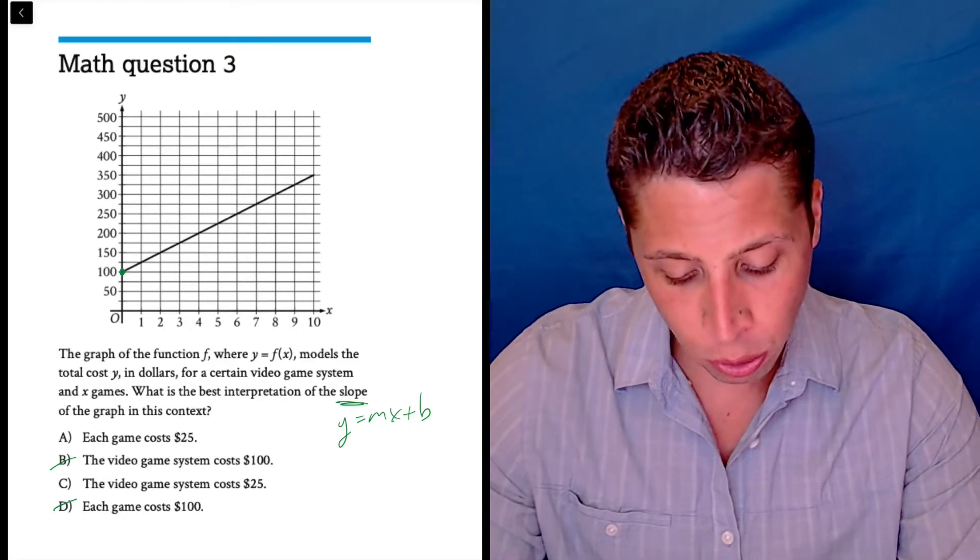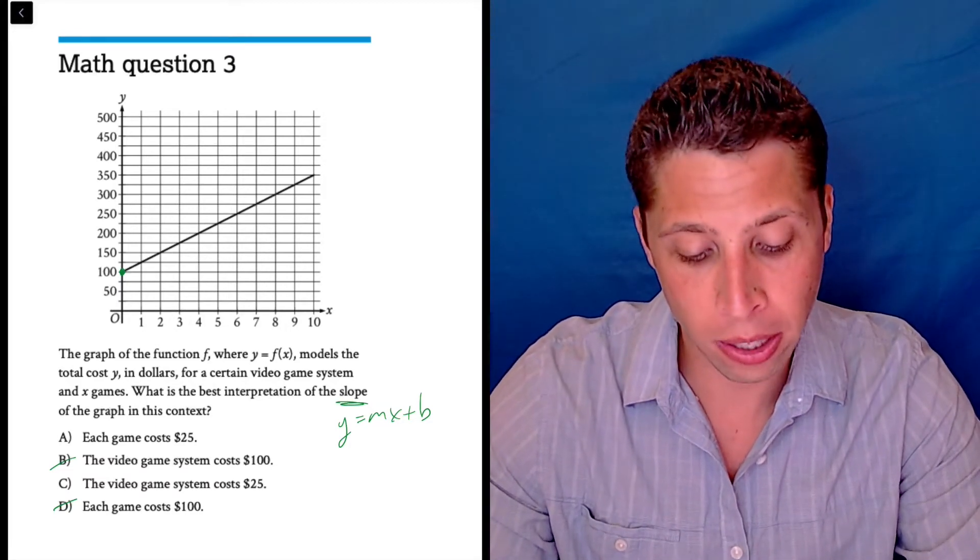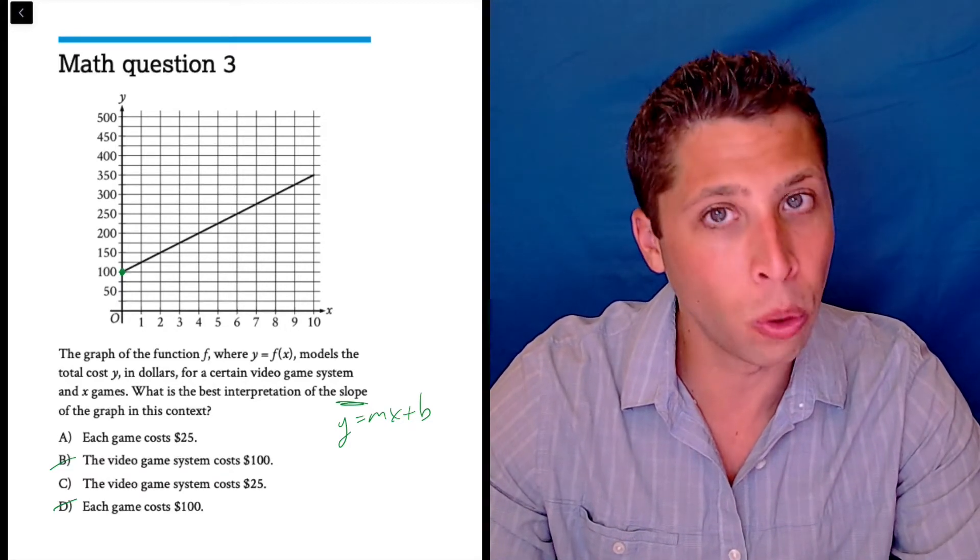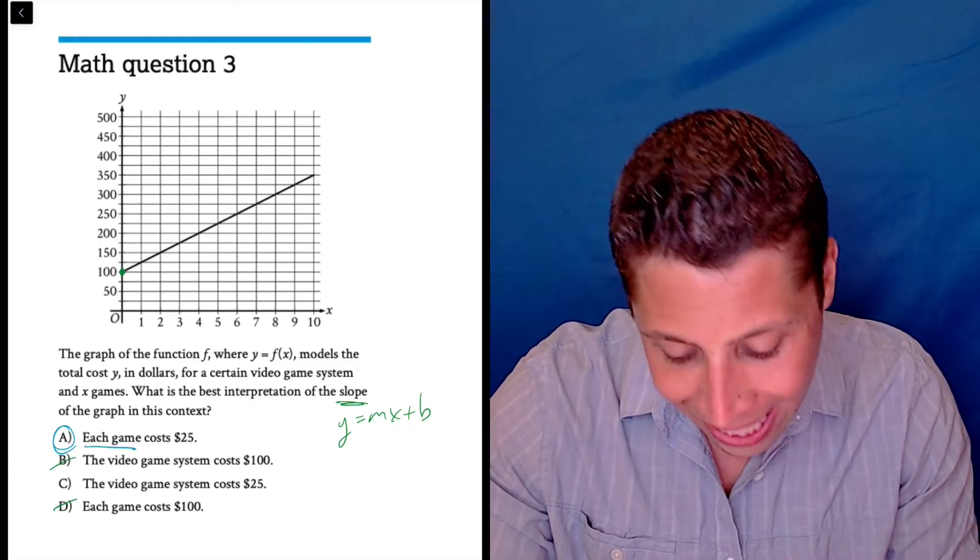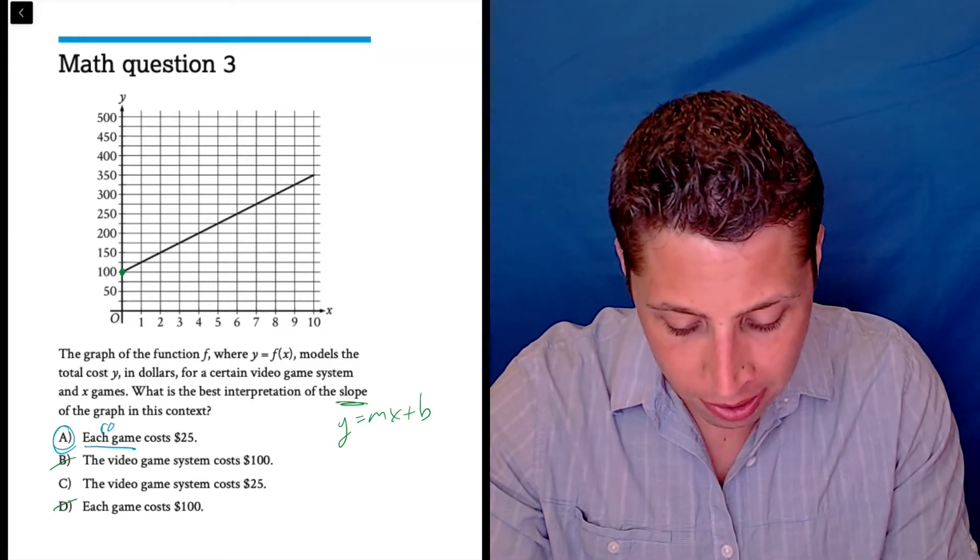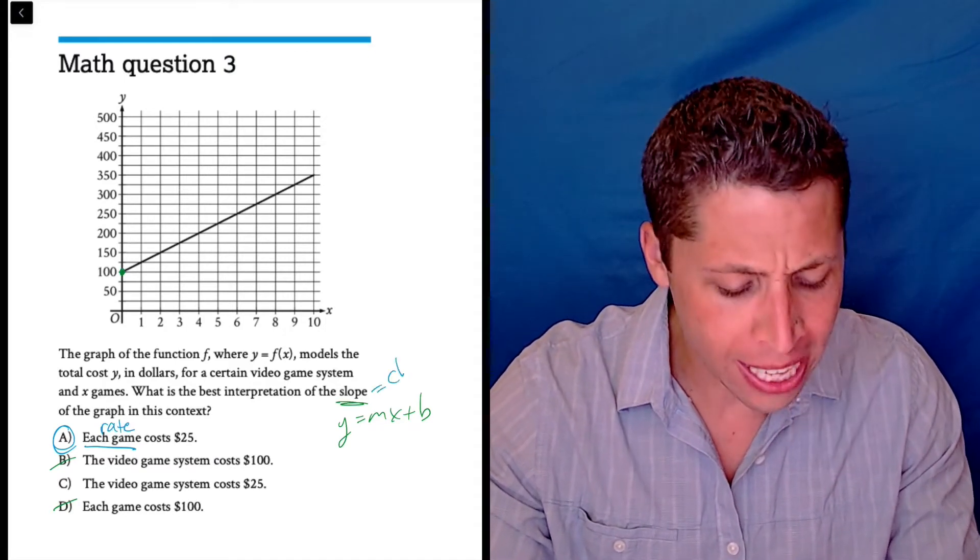What we need to decide is which of these sounds more like a slope. This was a skill that was definitely on the old SAT and on the new one as well. We need to look for keywords, and 'each game' makes this sound like a rate. That's what slope is - it's a rate, it's a change.